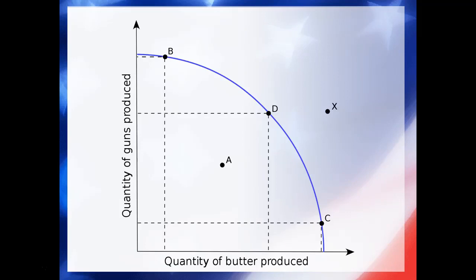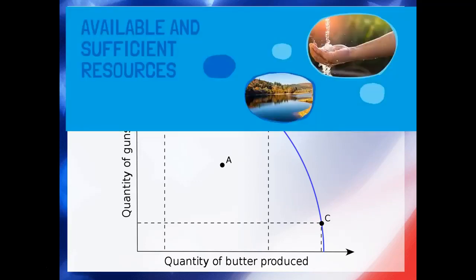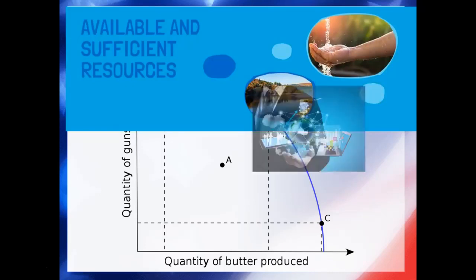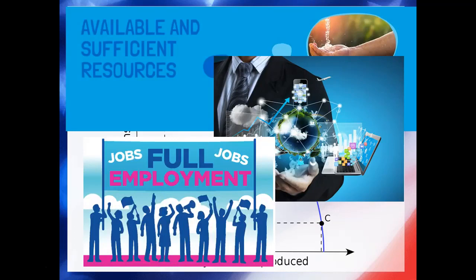Beyond this place, you cannot produce. The production possibilities curve assumes three things: that there is sufficient available resources — there's enough stuff to make everything we want; there's fixed technology — we have the tech available to utilize those resources in such a way that they will make what we want; and there's full employment.